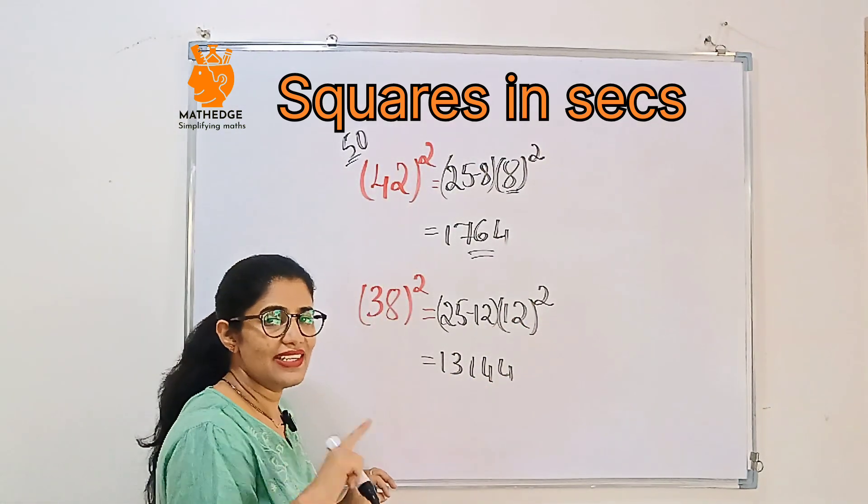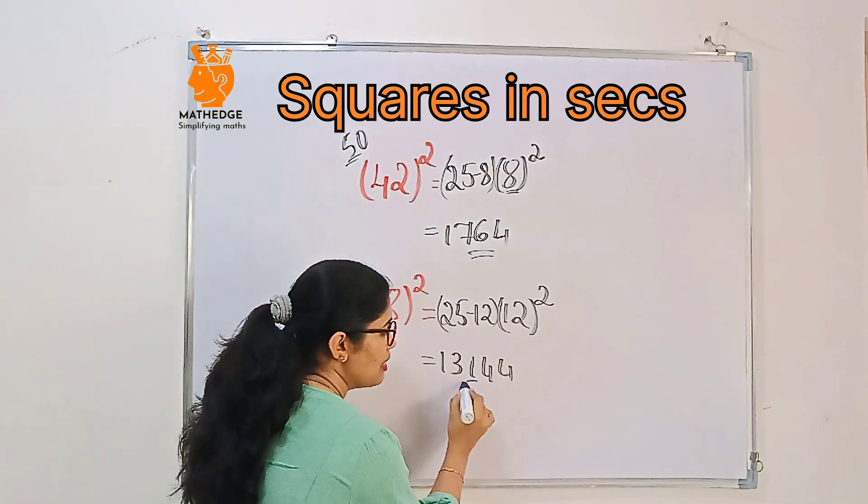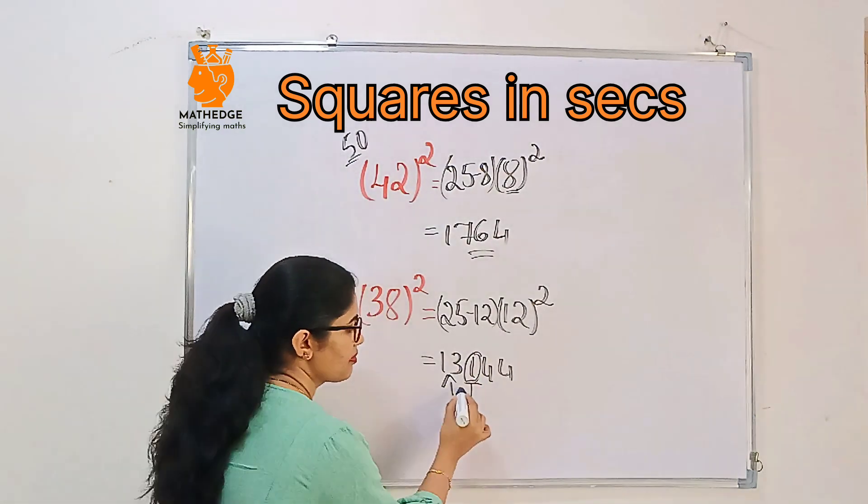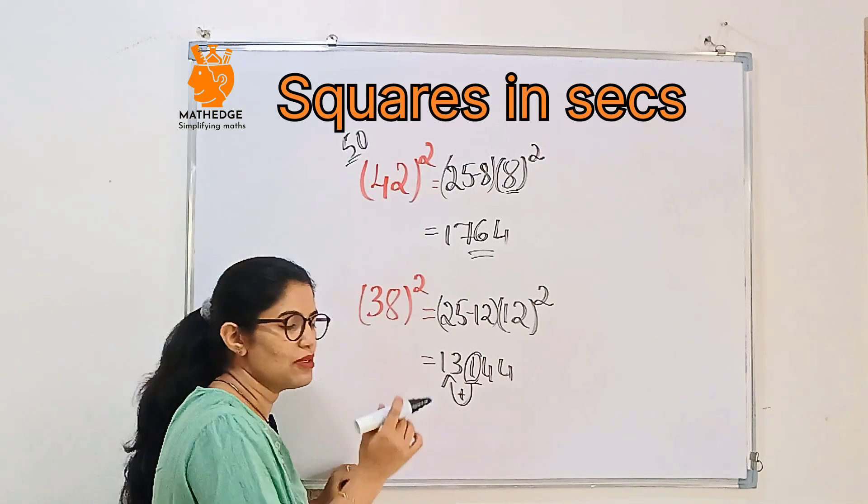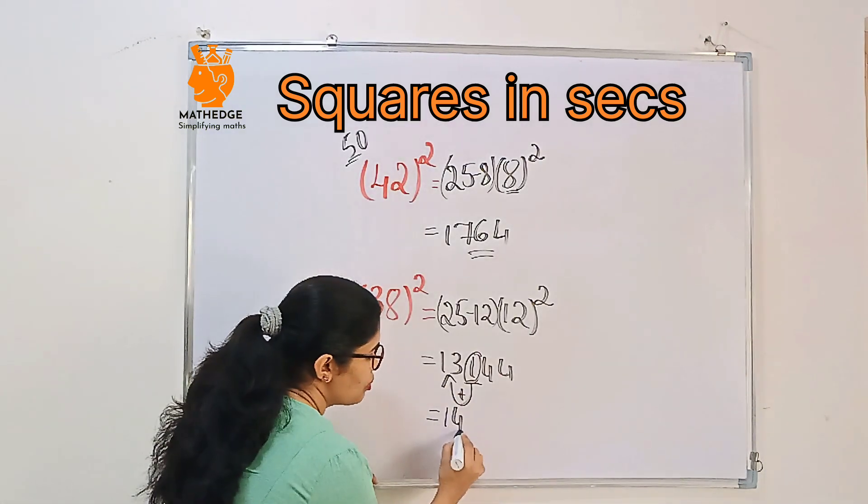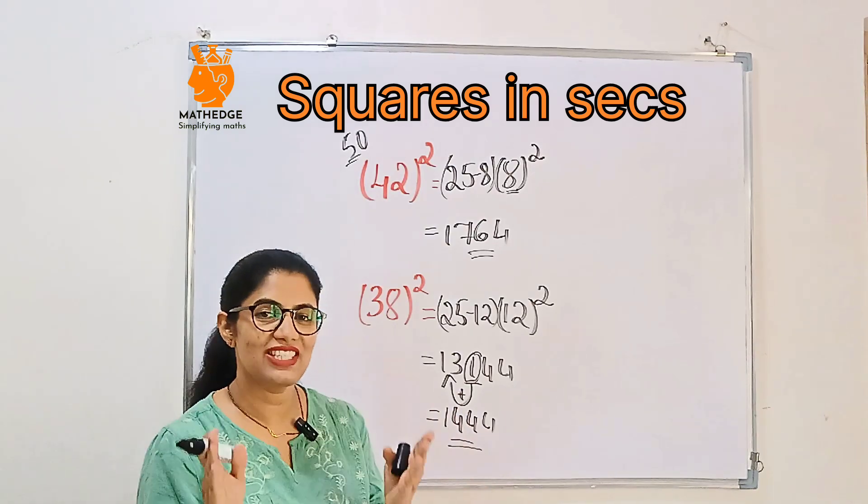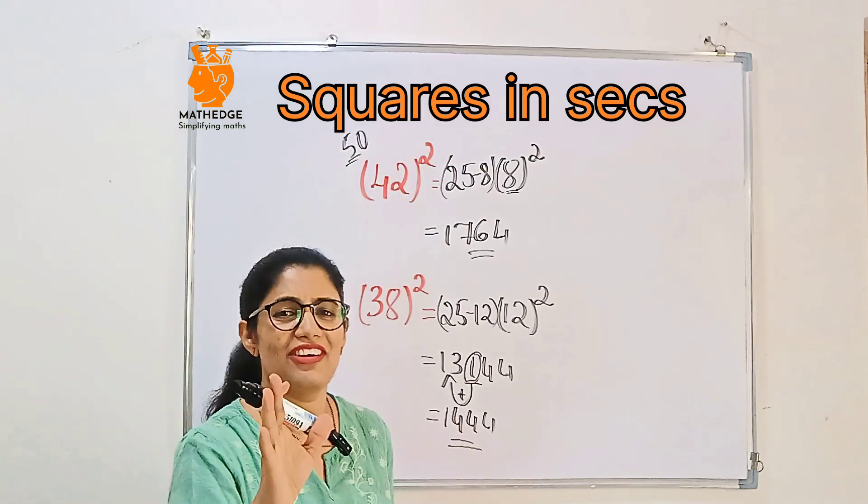But as I said, we should place only a 2-digit number. So this number will be carried out to the next part, right? So 13 plus 1 is 14, and the remaining is 44. So that's done: 1444. We'll just finish with lightning speed in a second.